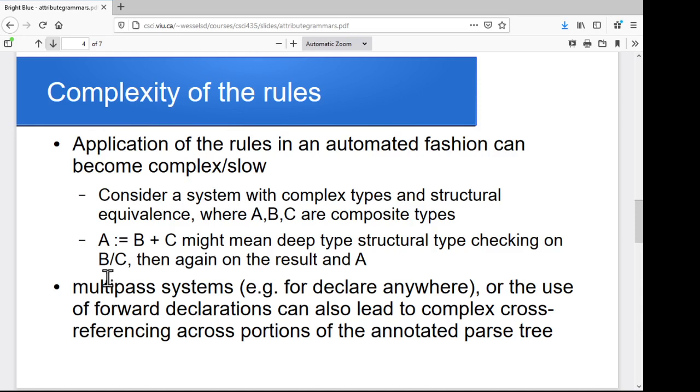So things can be fairly complex and can grow in complexity quite quickly in most automated general-purpose systems. If you've got a system where you're trying to support things like Declare Anywhere, and you're making multiple passes through the system, or you've got forward declarations that you're going, or once you finally see the declaration, you're linking back to wherever it was used and trying to fill in the pieces there. Then you can start running into fairly complex issues with cross-referencing back and forth across these attribute rules in different portions of your parse tree. So again, the complexity can get quite nasty.